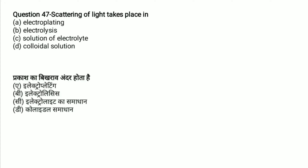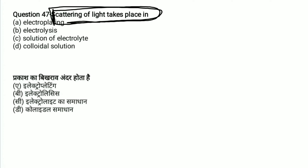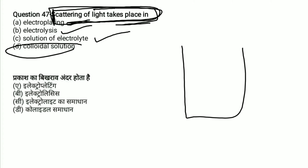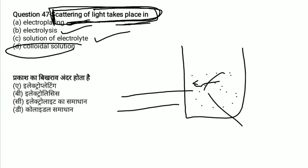The scattering of light takes place in which type of solution? Electroplating and electrolysis are not the answer. A colloidal solution is where scattering of light occurs, because particles in a colloidal solution cause light to scatter when passed through it.